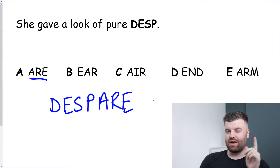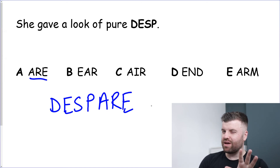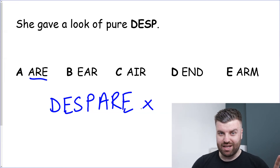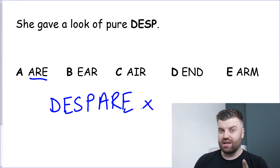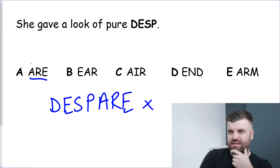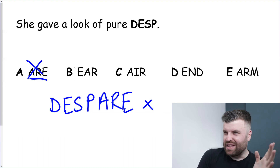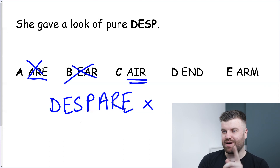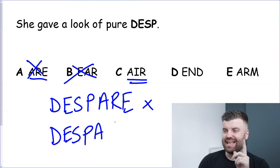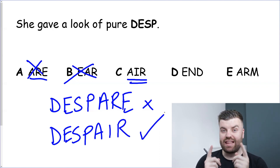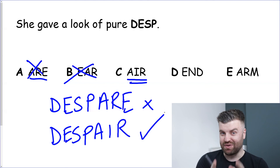Wrong — that would not get you a mark. Even though we have the right word, despair, the spelling D-E-S-P-A-R-E is incorrect. This question is testing your spelling too. Let's keep testing: B is EAR — DESREP — doesn't sound right. C is AIR — let's write it out: D-E-S-P-A-I-R. That looks right — that is the correct spelling of despair. These questions test whether you know how to spell words correctly.